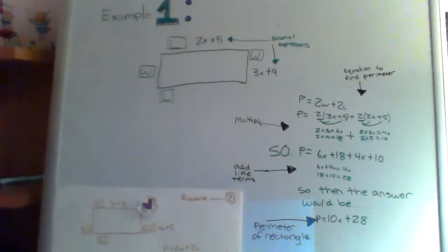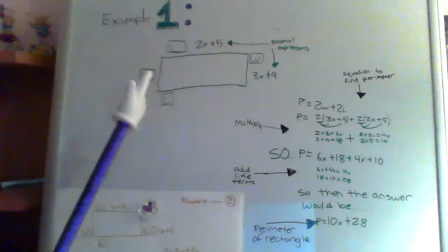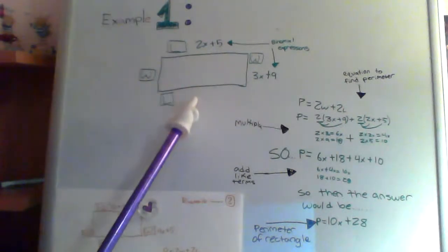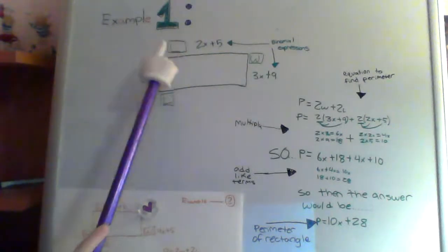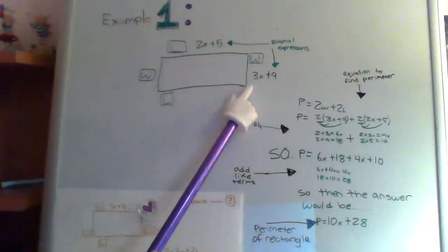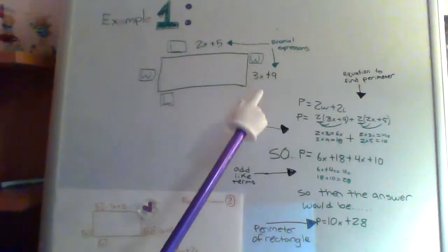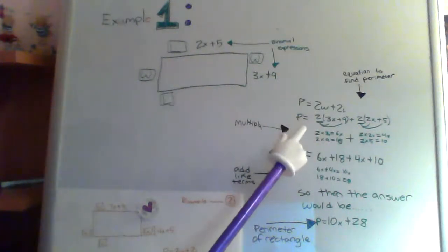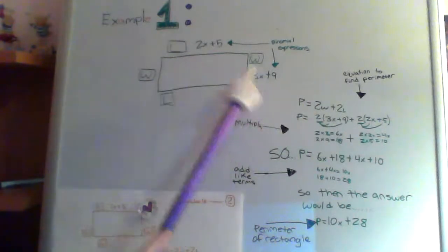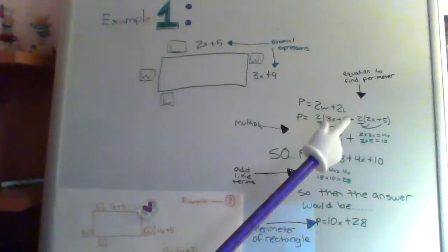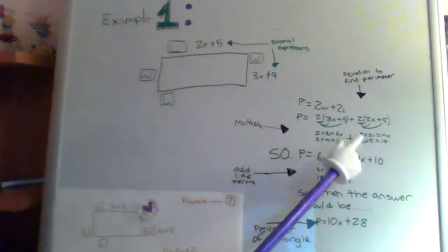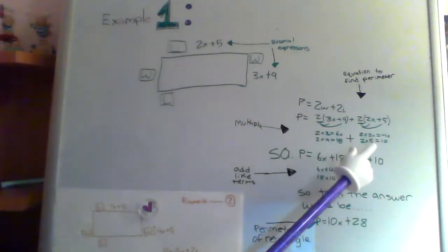Example 1. In this rectangle right here that I drew, the length is 2X plus 5, and the width is 3X plus 9. These are the binomial expressions. To find the perimeter, you have to multiply these by 2 and then add them together. So you'd write it 2 times (3X plus 9) plus 2 times (2X plus 5).